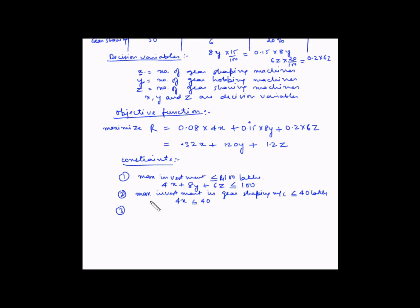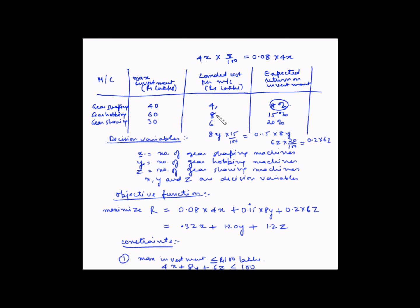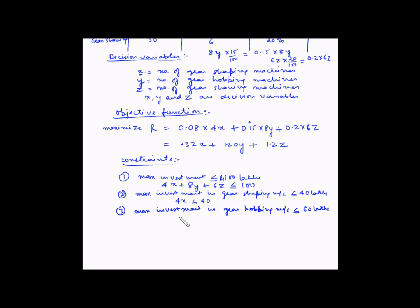The third constraint is that the maximum investment in gear hobbing machines must not exceed rupees 60 lakhs. Since the landed cost per machine is 8 lakhs and the quantity is y, the total investment is 8y, so: 8y ≤ 60. The fourth constraint is that the maximum investment in gear shaving machines should be less than or equal to 30 lakhs.